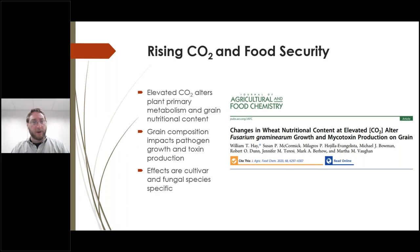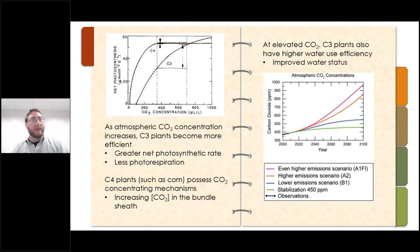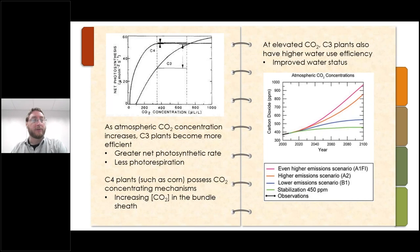This effect is cultivar and fungal species specific, and has some potentially concerning long-term implications for food security. Concerning rising CO2: by the end of this century, we're expecting to see a doubling in CO2 concentration in the atmosphere, and that's going to have very significant impacts on agriculture in general. In this system, we are specifically talking about wheat, which is a C3 crop. C3 photosynthetic plants are expected to have an increase in photosynthetic rate, improved water status, and less overall photorespiration, particularly compared to C4 plants such as corn.